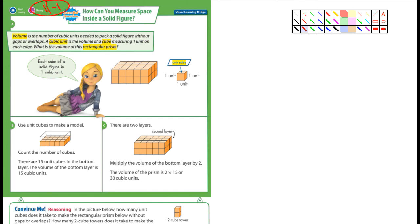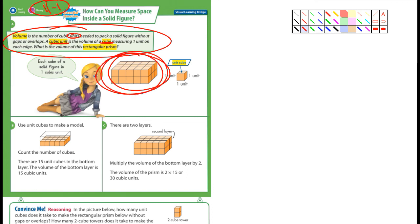They give you a definition here that's going to come into play in a few minutes. It says volume is the number of cubic units needed to pack a solid figure without gaps or overlaps. A cubic unit is the volume of a cube. You can see right here this is made up of cubes. It's not just an empty prism, it's made up of separate cubes.